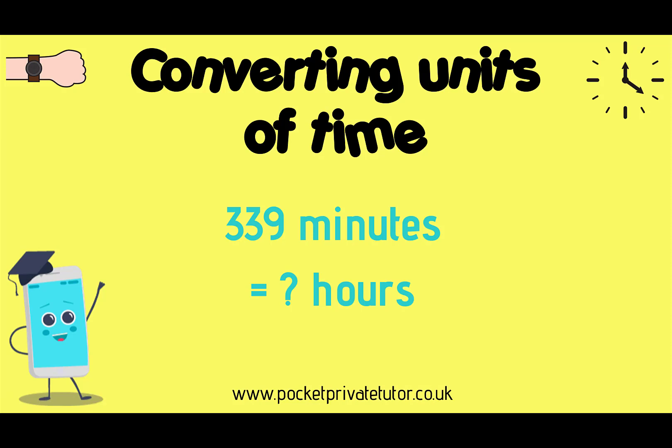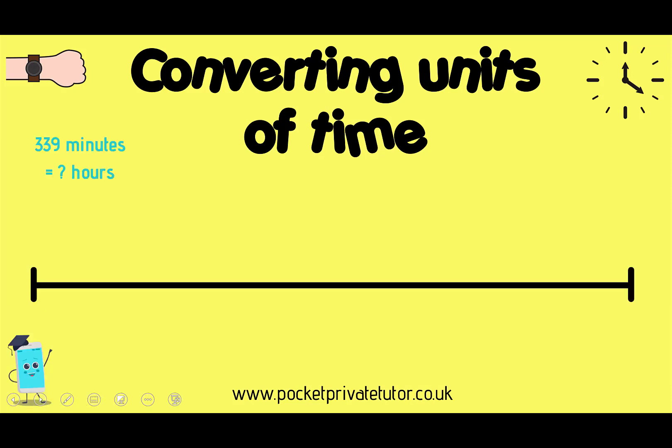Our first problem is to change 339 minutes to hours. How many hours is equivalent to 339 minutes? We need to first think about how many minutes are in one hour. So 60 minutes is equal to one hour — I'll write M for minutes and H for hour.